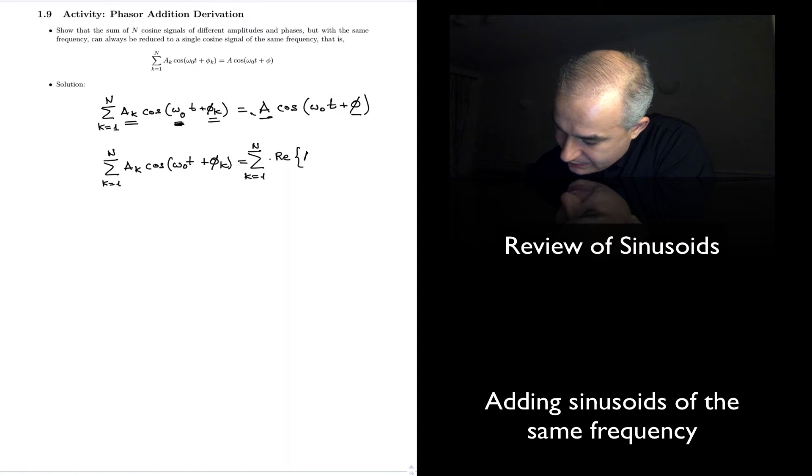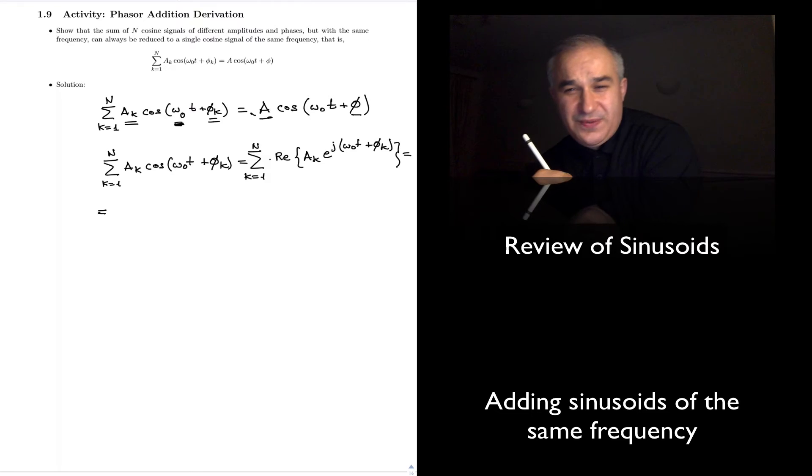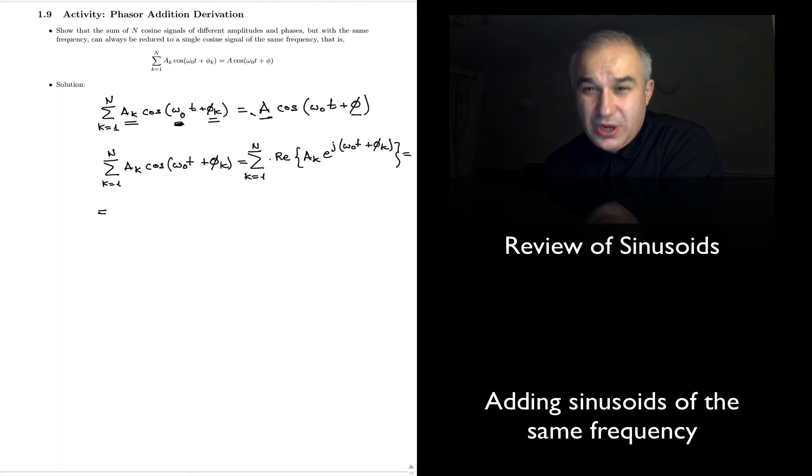And of the real part. The real operator, A_k e to the j, omega zero t plus the phase. Just watch the previous video. If you have a question about this step.